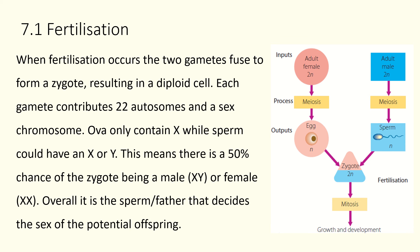Fertilization is one of the points where we get genetic variation. Two gametes, each with a randomly allocated half of their parent's DNA, come together to create a diploid cell. It's like pulling apart two Lego cars and making one new car — it'll have aspects of both originals but won't be identical. Each gamete contributes 22 autosomes and one sex chromosome.